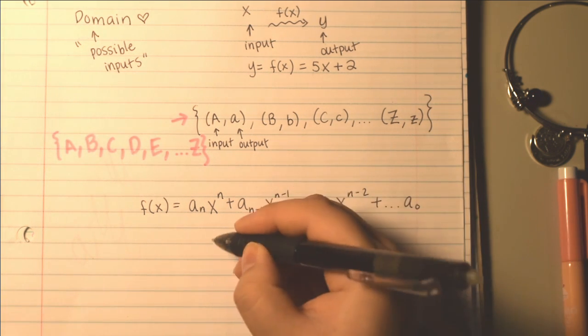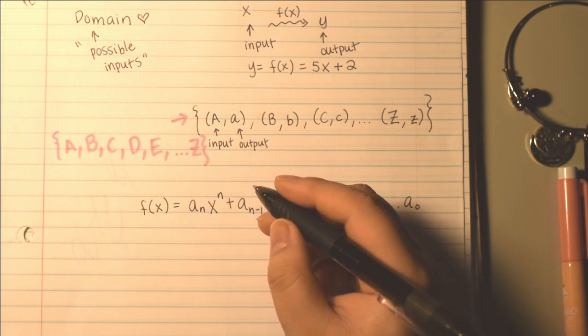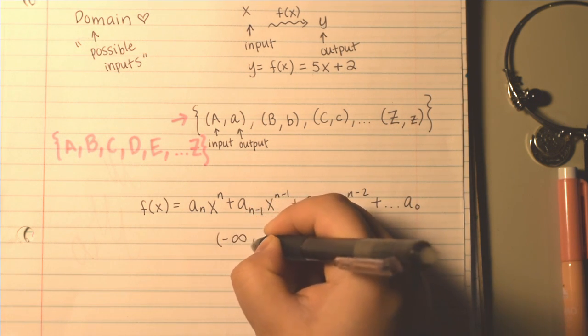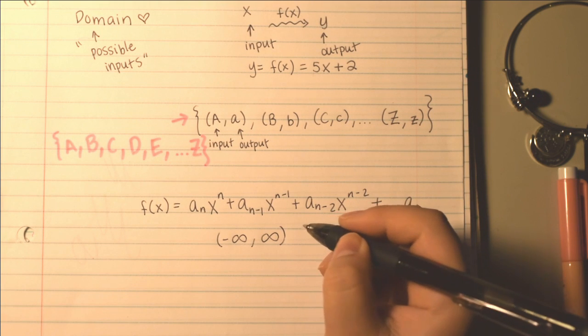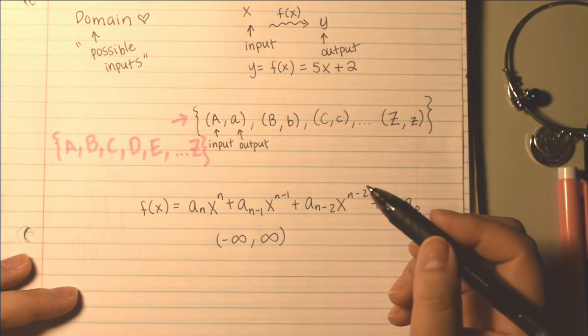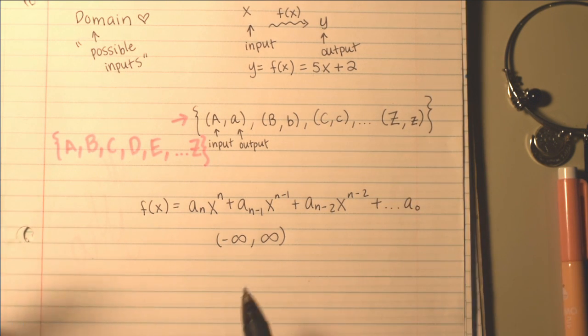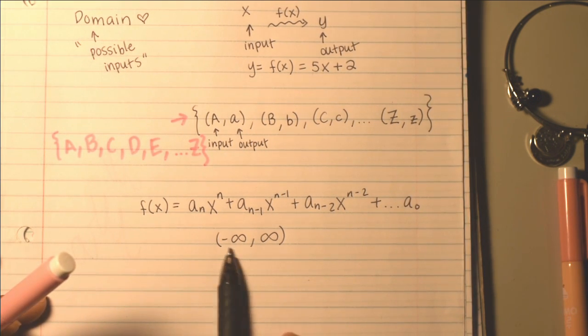The idea is you have coefficients. So a_n is a coefficient. You know, negative 6x to the 6th plus 3x to the 5th, and some of these coefficients might be 0. So any linear combination of these is fine.